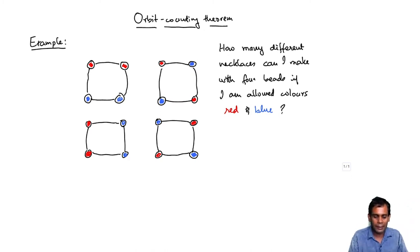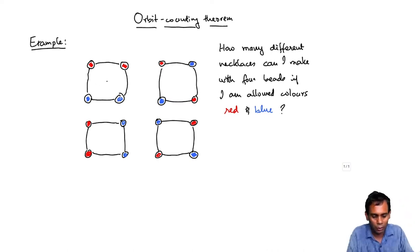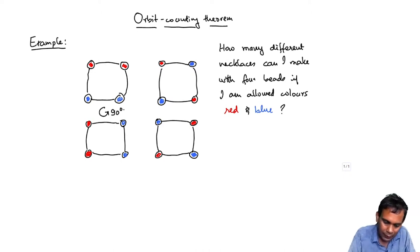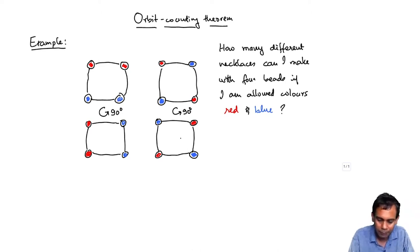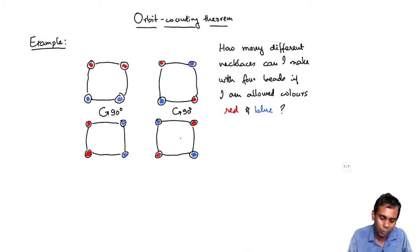What do I mean by different necklaces? These two necklaces are really the same, because if I just take this necklace and rotate it counterclockwise by 90 degrees, it becomes the other necklace. These necklaces have a symmetry of the group Z mod 4Z, the cyclic group of order 4.